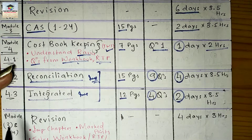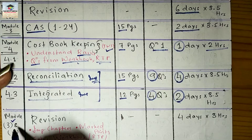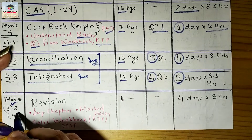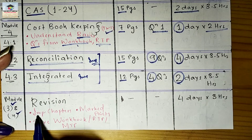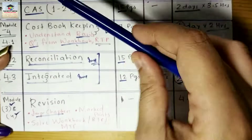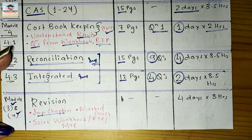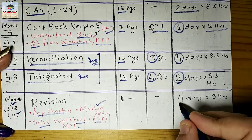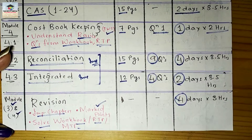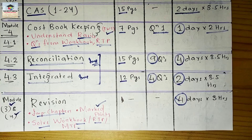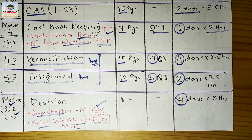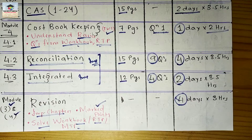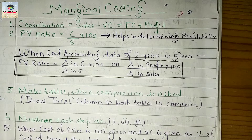Lastly, do a final revision of Modules 3 and 4. Go through all important chapters and marked important points, and solve more questions from the Workbook, RTP, and MTP. This last revision takes four days. This way, in 80 days you will have complete coverage of your study material and your first revision of Paper 8 — Cost Accounting — will be done.